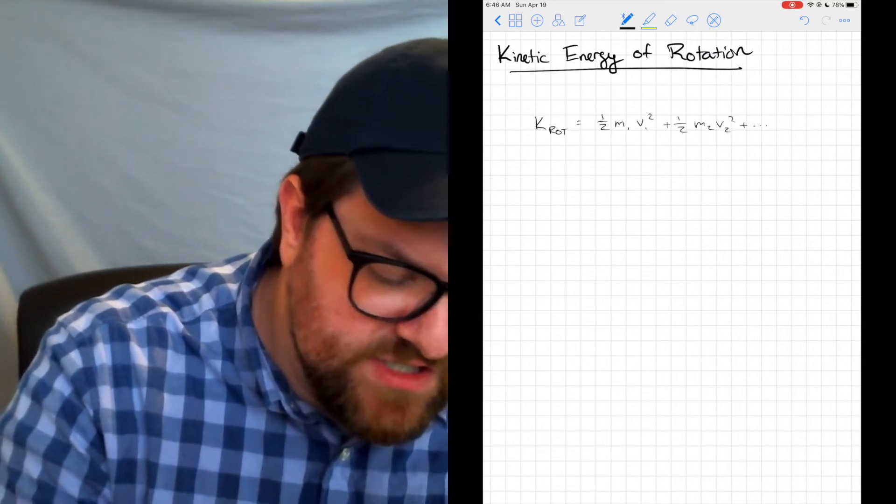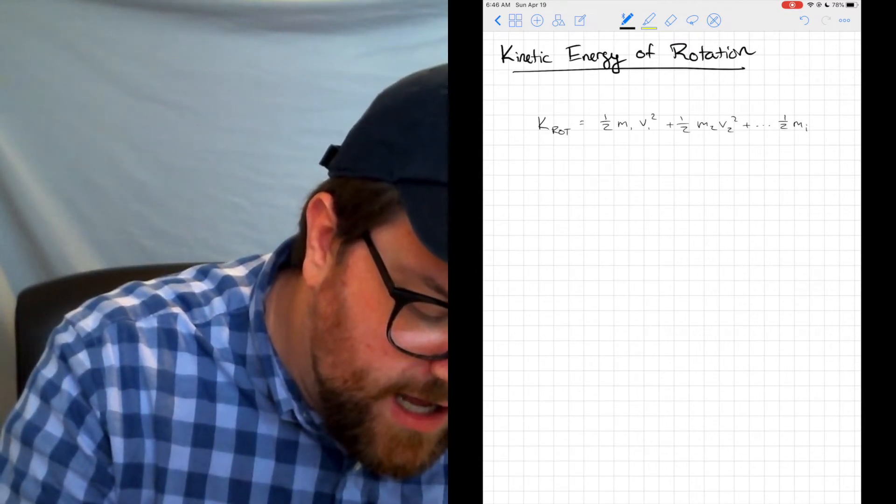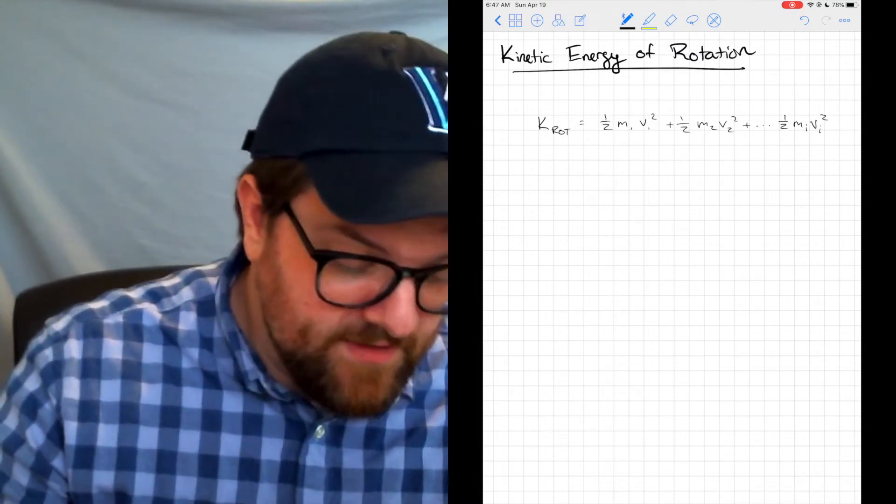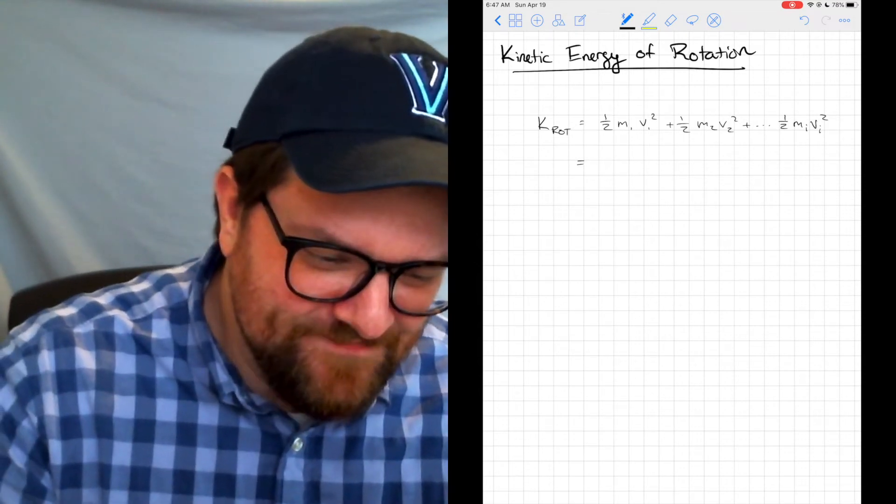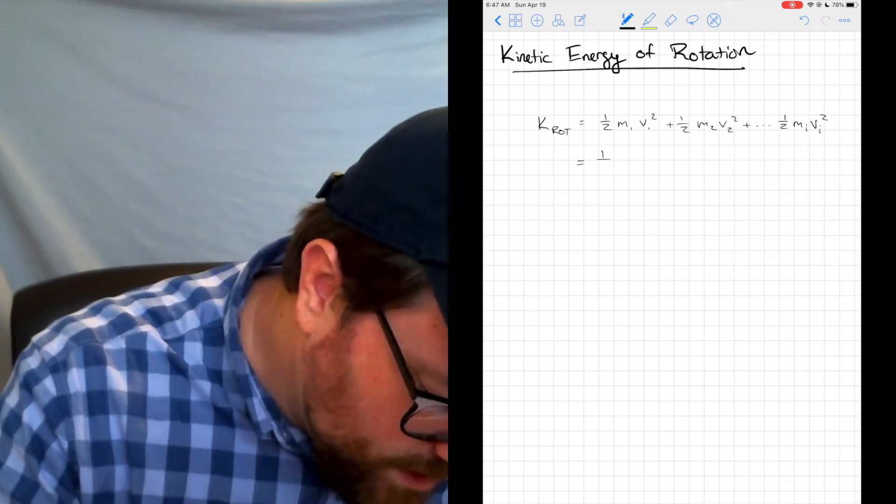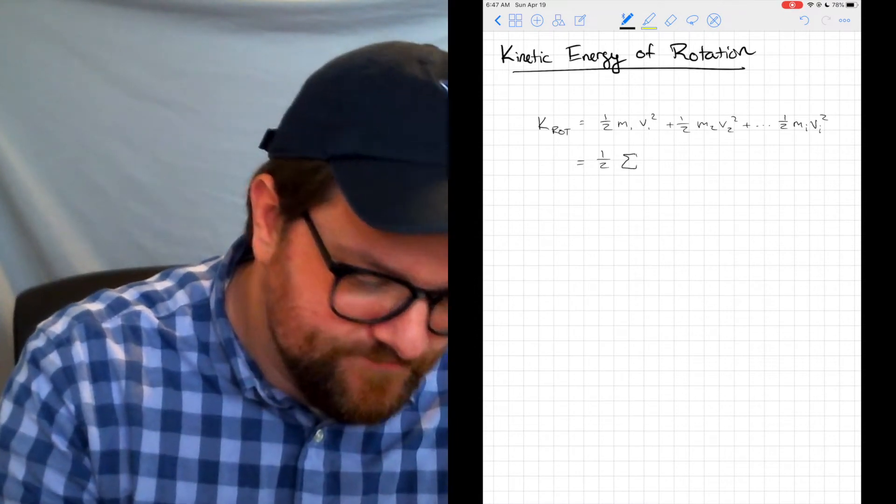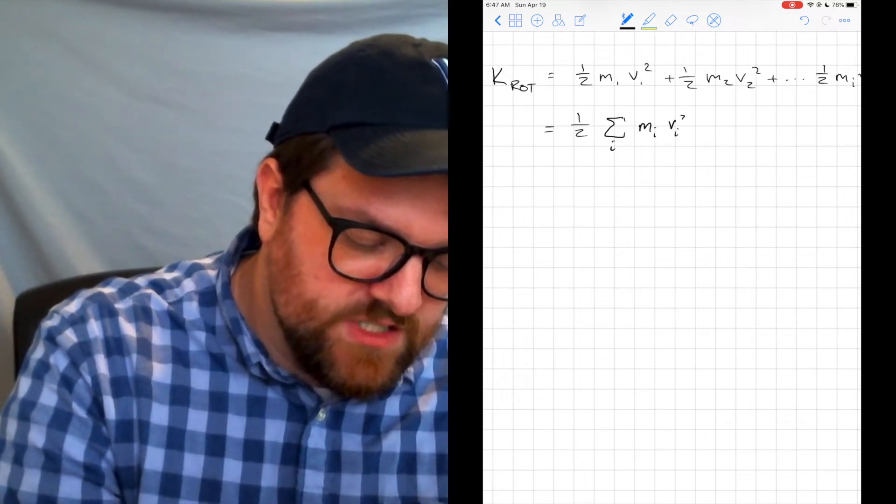So I'm going to say 1/2 m₁v₁² + 1/2 m₂v₂². I'm not going to continue this, I'm just going to say dot dot dot, and then 1/2 mᵢvᵢ². So really I'm summing this up like we've been summing almost all our quantities up. And I can pull out 1/2 from this and say that that's equal to my summation over i of mᵢvᵢ².